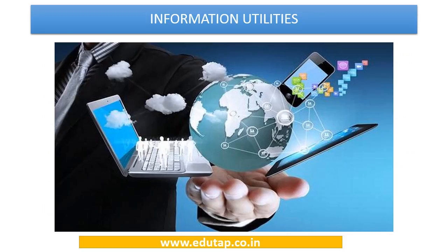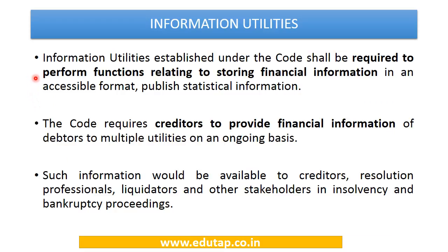Information utilities are established under the code to store financial information in an accessible format and publish statistical information. The code recognizes the importance of collecting information to monitor debt levels among companies. Creditors are required to provide financial information to the information utility on an ongoing basis regarding the financial position of debtors, enabling adequate monitoring. This information is made available to creditors, resolution professionals, liquidators, and other stakeholders in insolvency and bankruptcy proceedings.